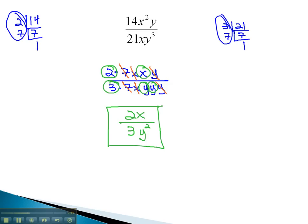In much the same way we reduced with numbers by dividing out common factors, by listing the variables as a product, we can divide out common variable factors as well.